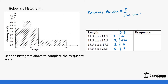To get the frequency, frequency density equals frequency over class width, so frequency equals class width times frequency density. For the first interval: 2 times 3 gives us 6. Then 2 times 4.25 gives us 8.5. Then 2 times 3 gives us 6, and 6 times 1 gives us 6.